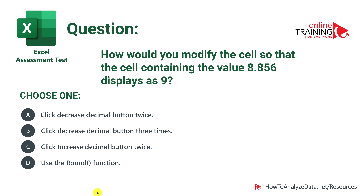One important thing to note in these types of questions: we are only changing the display value — the question says 'displays as 9'. We are not trying to change the actual underlying value. Keep that in mind as you think of the right answer.